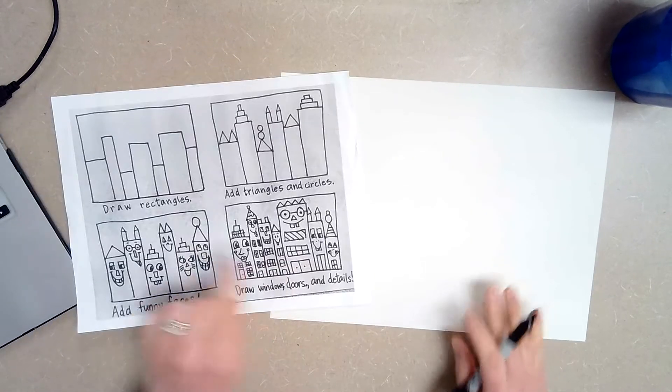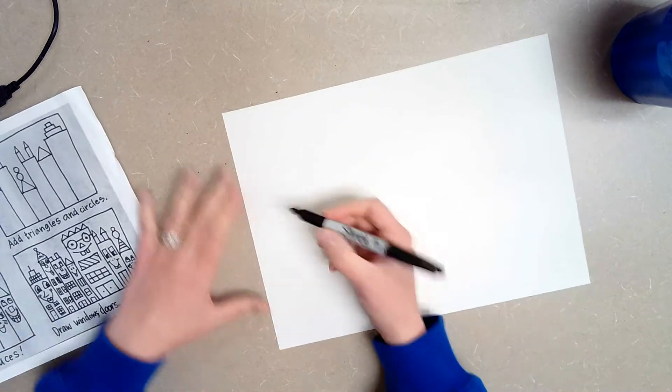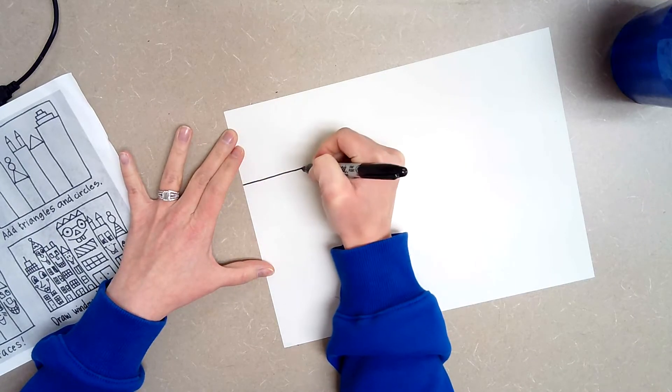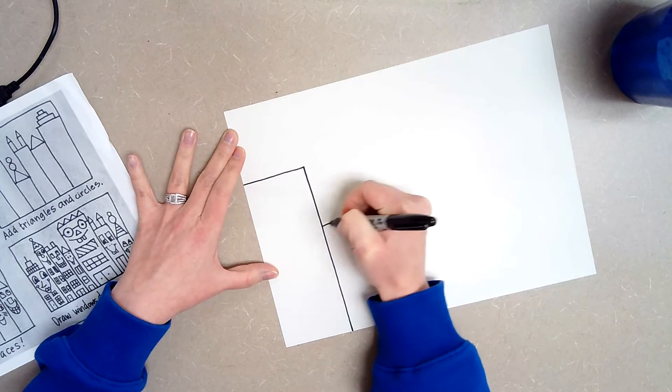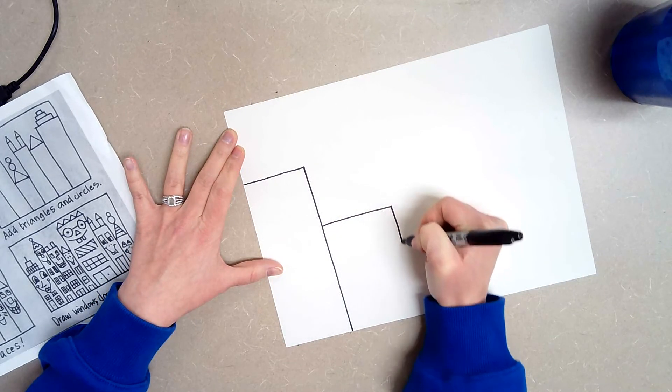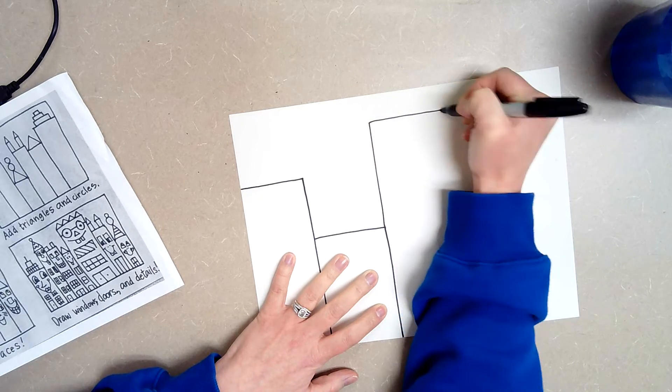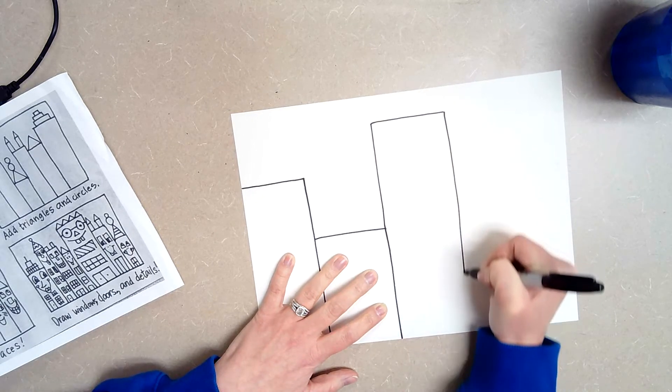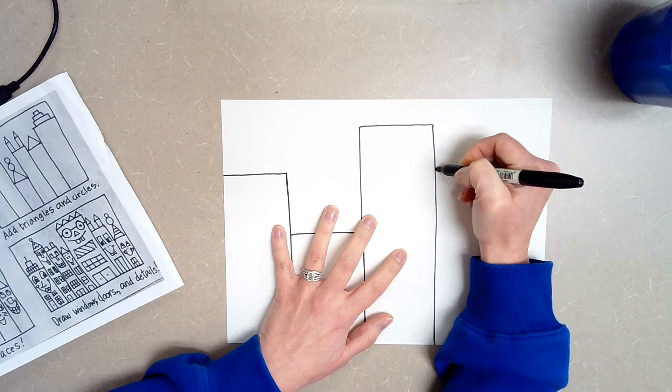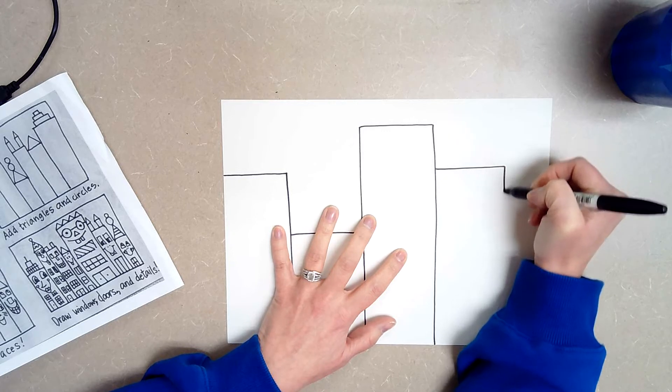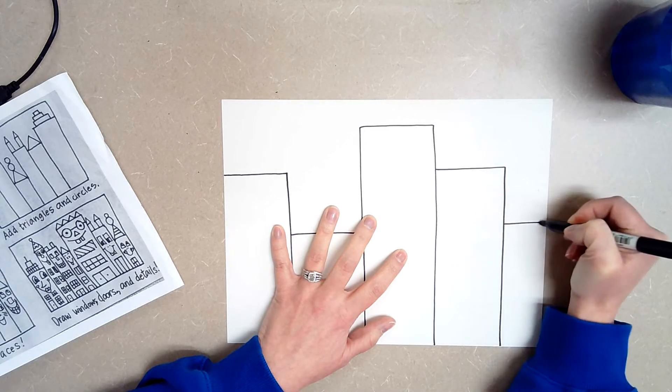Okay, so the first step is we need to draw some rectangles for our city. I am just going to go ahead and start adding in different sized rectangles. Some are going to be small, some are going to be large. I like to put them side by side just so you can see all of the faces, but if you want yours to overlap a little bit that's fine too. Just make sure that you can fit a silly face.